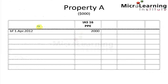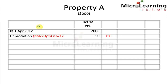As the property was being used as an admin building on the 1st of April 2012, we classify it under IAS 16 at a depreciated historic cost of $2 million. As it was not reclassified to an investment property until the 1st of October 2012, we first need to charge depreciation on the IAS 16 property. This depreciation is calculated on the cost of $2 million over the 20-year useful economic life for six months, giving us a charge of $50,000 to the P&L.